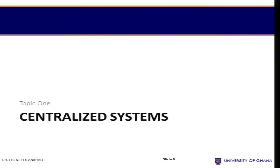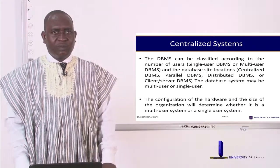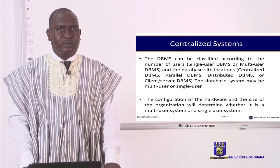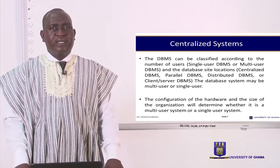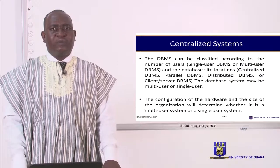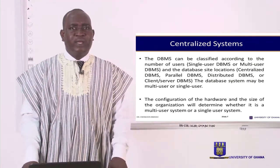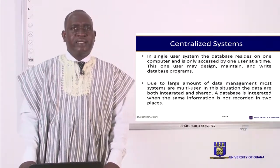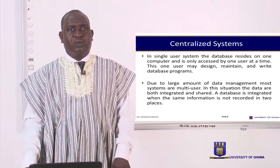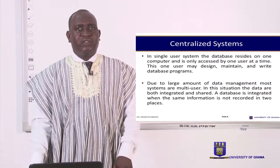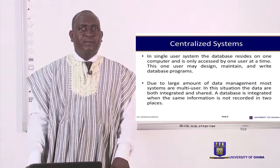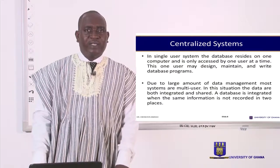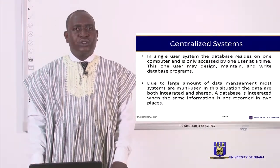Let's start with centralized systems. A database system can be classified according to the number of users — multi-user or single user. The configuration of the hardware and the size of the organization will determine which type it is. In a single user system, the database resides on one computer and is only accessed by one user at a time, who may design, maintain, and write the database programs. Due to the large amount of data management, most systems are multi-user systems.